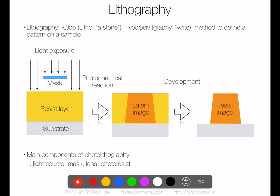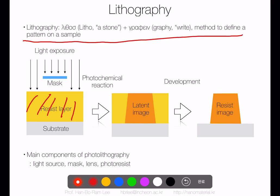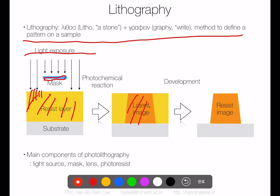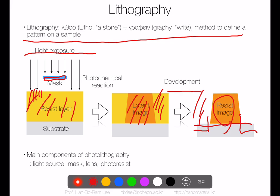Now let's move on to the double patterning process. Lithography means we have a resist layer, block some light exposure using a mask, expose the resist to the light source — which changes the resist by interaction with light — then use a development solution to selectively remove the exposed resist, making a PR pattern on the substrate, and then etch that pattern into the underlying layer.